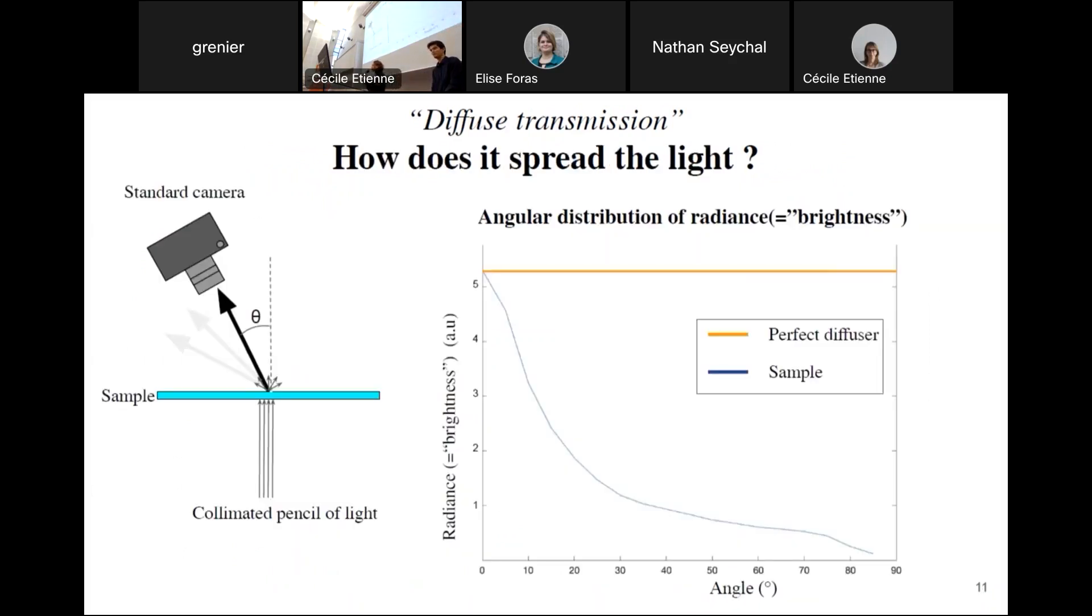Now, let's go further and quantify how the light is spread after the sample. So we measure the radiance for different angles. And theoretically, a perfect diffuser has a constant radiance. But here, as you can see on the blue curve, although some light is spread in all directions, it is not at all a perfect diffuser.